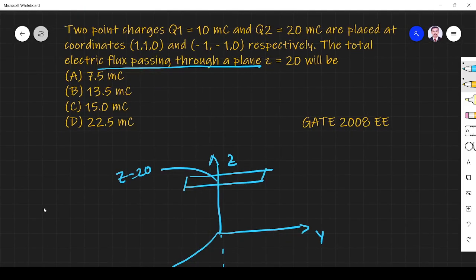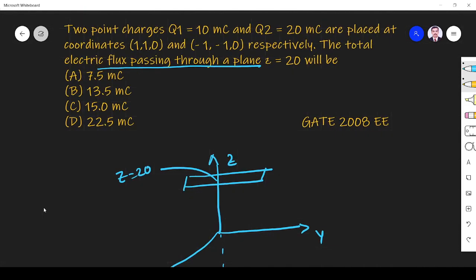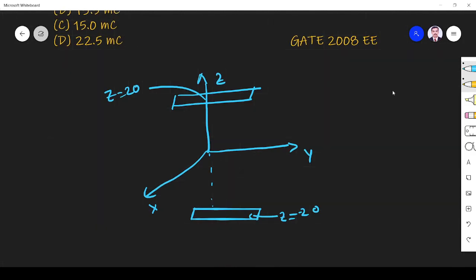What they are asking? They are telling 10 millicolum and 20 millicolum are placed at (1,1,0). So x1, y1 maybe somewhere here. Here 10 millicolum.